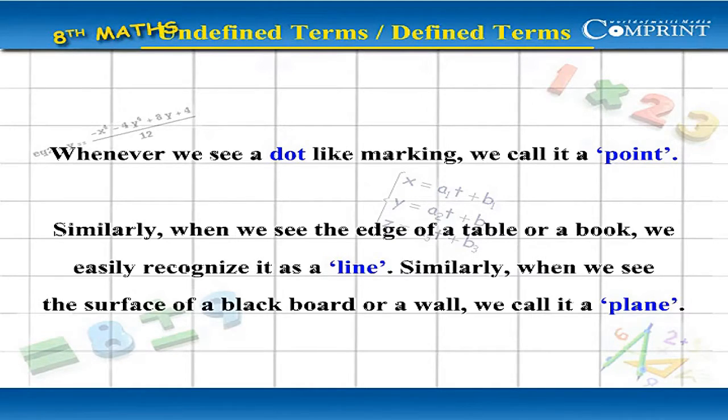Similarly, when we see the edge of a table or a book, we easily recognize it as a line. Similarly, when we see the surface of a blackboard or a wall, we call it a plane.